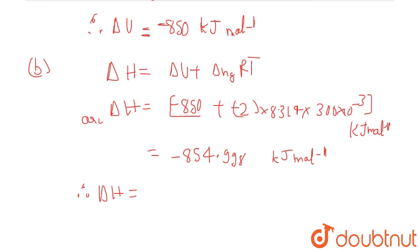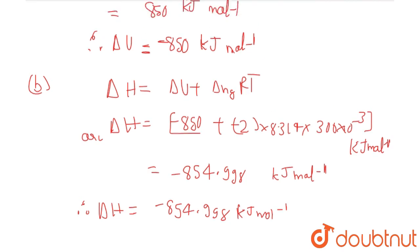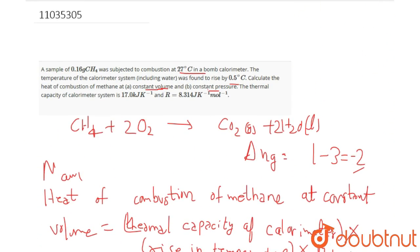Therefore, the heat of combustion at constant pressure, that is delta H, is equal to minus 854.98 kilojoule per mole. So this is the final solution for this question.